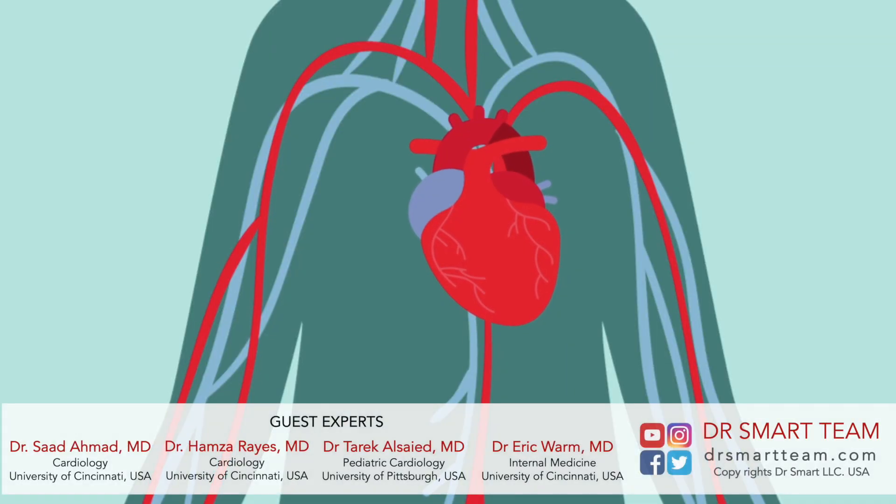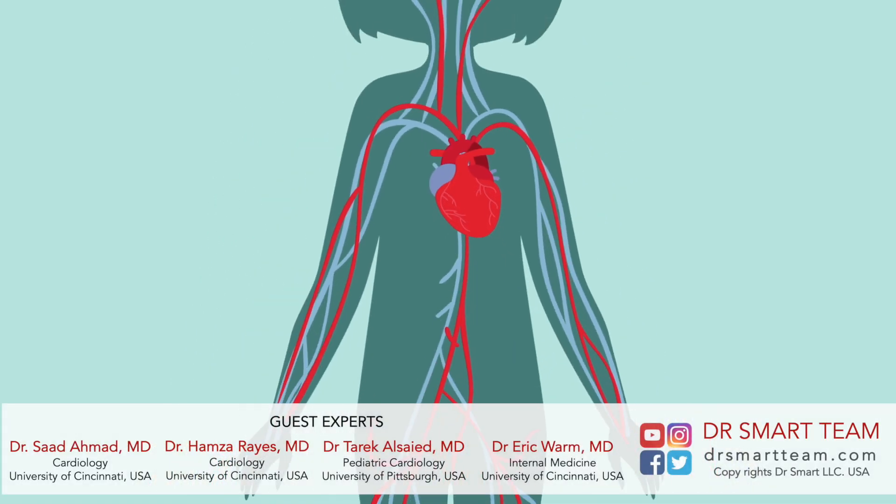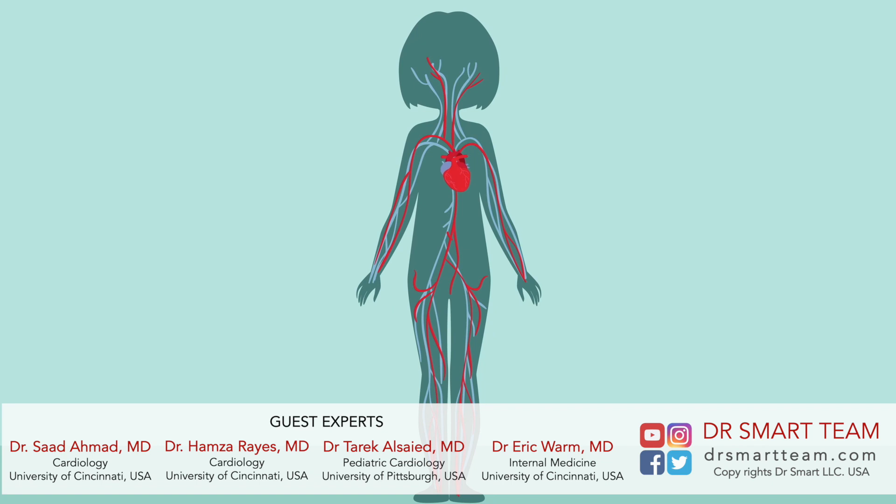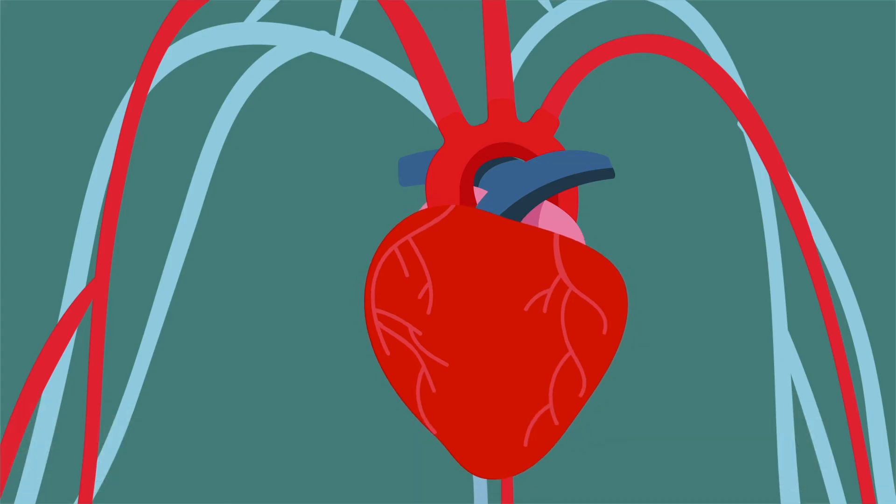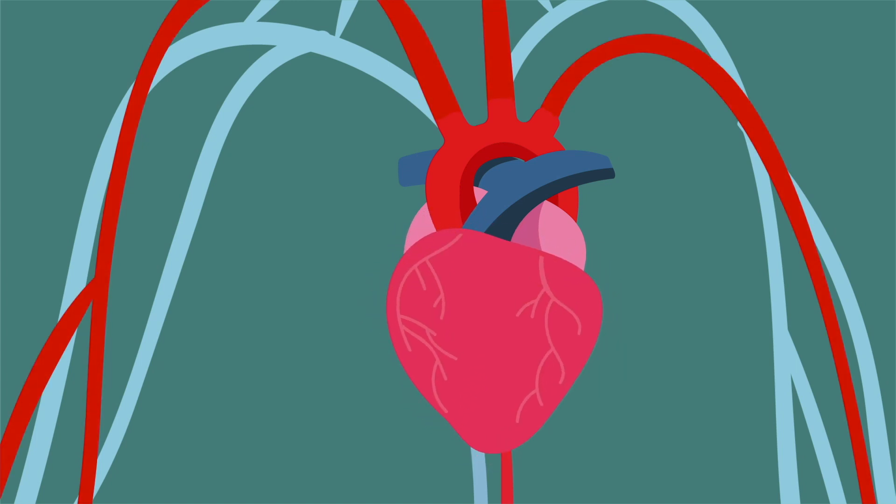Our heart is a pump that keeps the blood circulating in our body all the time. All parts of our body depend on the heart for their supply of blood that carries oxygen and energy. The walls of the heart are made of strong muscle. It relaxes to fill up with blood, and then squeezes to pump it out with force.